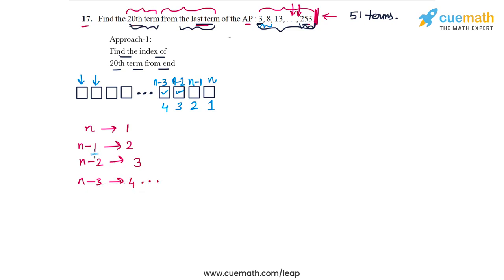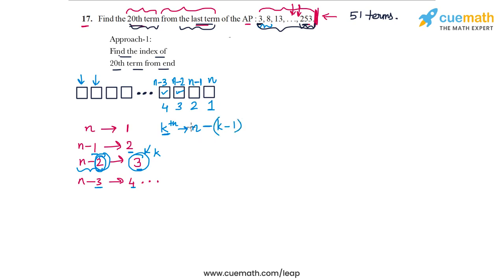From this pattern: the Nth term is 1st from the end, the (N−1)th is 2nd from the end, the (N−2)th is 3rd from the end. In general, the Kth term from the end is the (N − (K−1))th term from the beginning, i.e., the (N−K+1)th term. So the 20th term from the end is the (N−19)th term from the beginning.